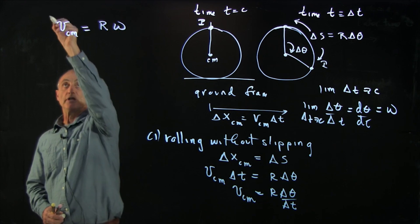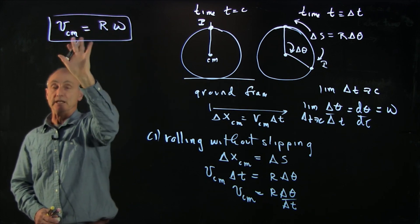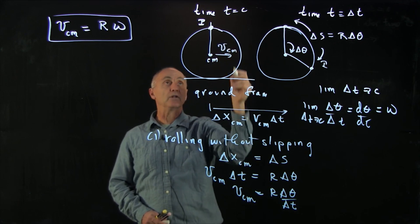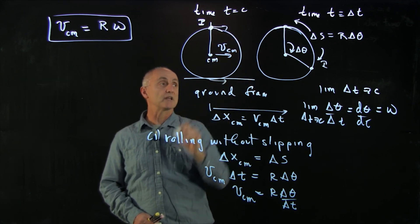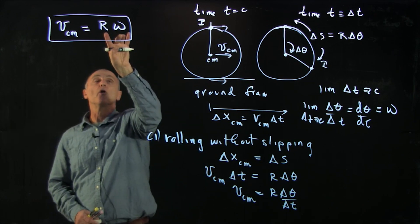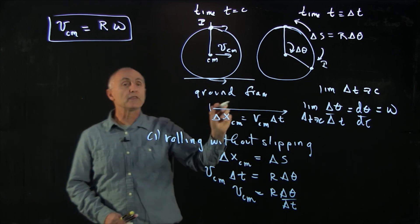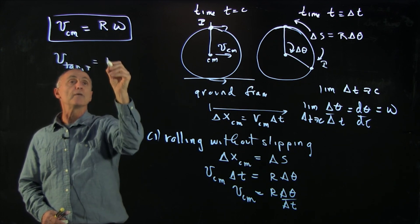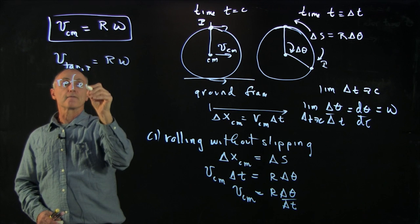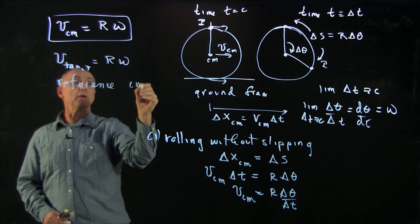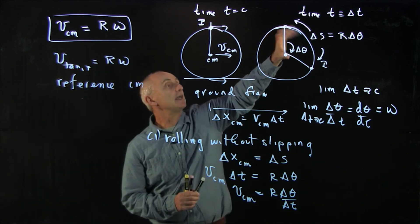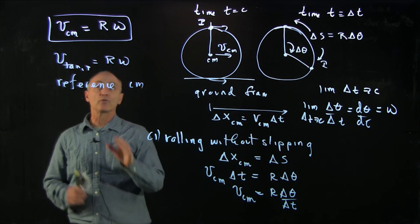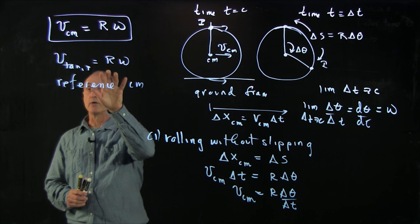So that's our first condition, and we call this the rolling without slipping. Now what is v cm? That's the velocity of the center of mass of the wheel, and every single point on this wheel has that same speed. And r omega, you can think of that as the tangential velocity in reference frame cm. This is just the speed in the reference frame moving with the center of mass. So this is our condition for rolling without slipping.